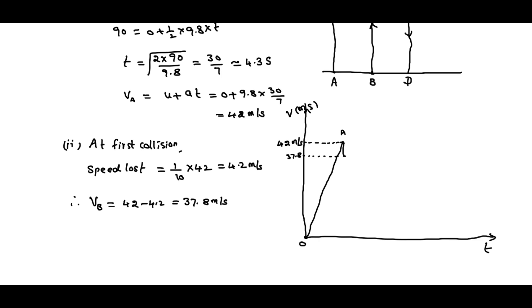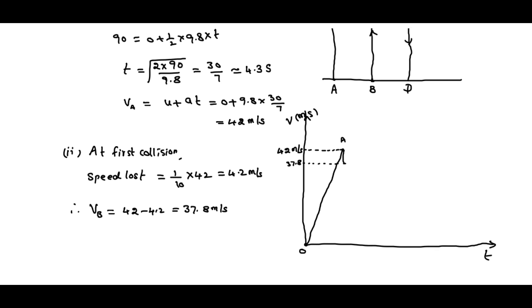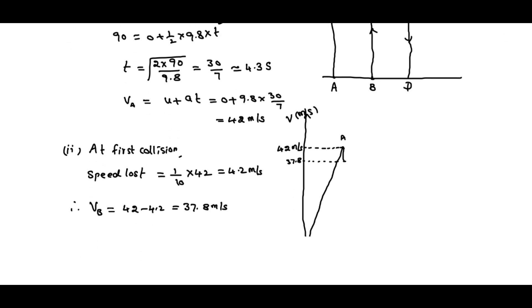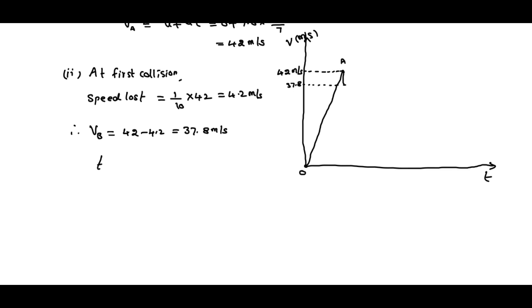Now again, what is the time taken here? How much time will it take to travel from B to C? The time taken to travel between B to C equals velocity divided by acceleration, that is divided by acceleration due to gravity. That is 37.8 divided by 9.8, nearly 3.9 seconds.